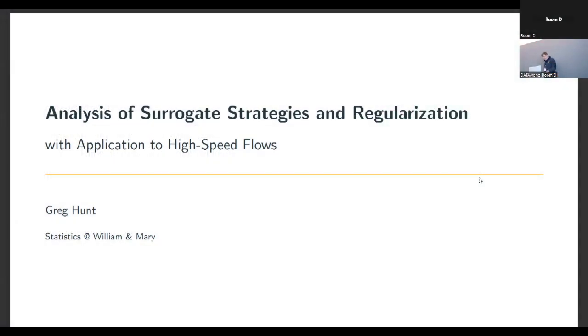Greg Hunt next from William & Mary. Greg is an interdisciplinary researcher that helps advance science with statistical and data analytic tools. He's a trained statistician, mathematician, and computer scientist and currently works on a diverse set of problems in engineering, physics, and microbiology. Take it away.